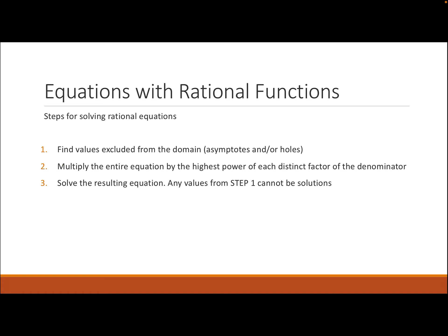The steps for solving rational equations are: first, find any excluded values — those are asymptotes or holes. Then multiply the entire equation to clear the denominators, and solve the resulting equation. Anything that is an asymptote or a hole cannot be a solution.